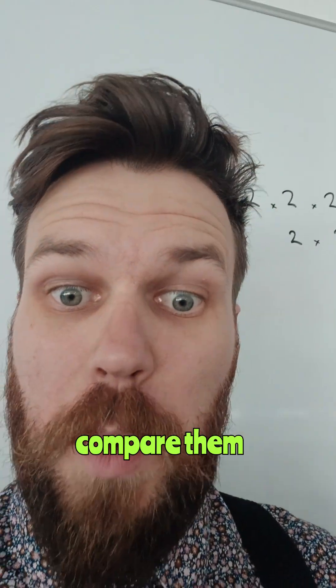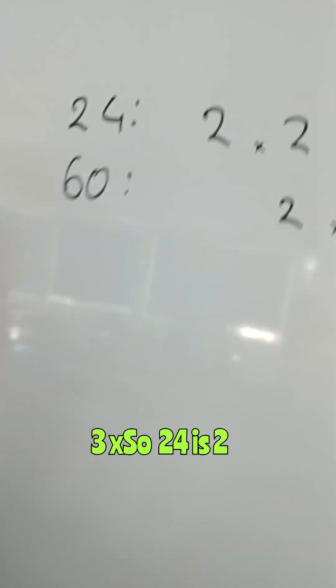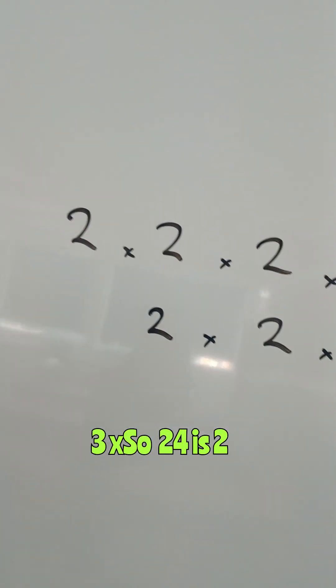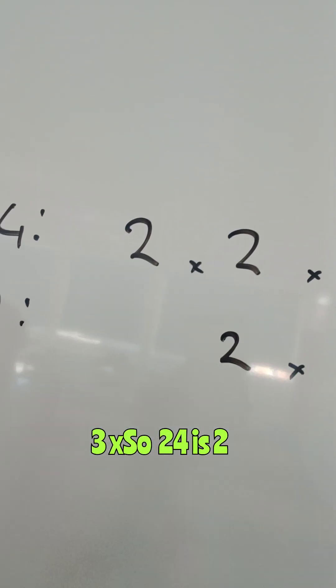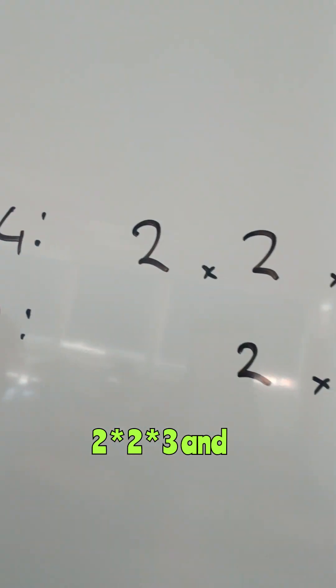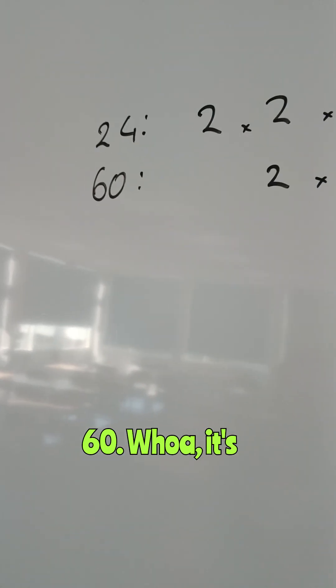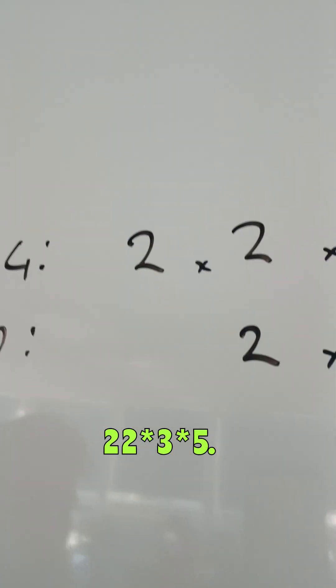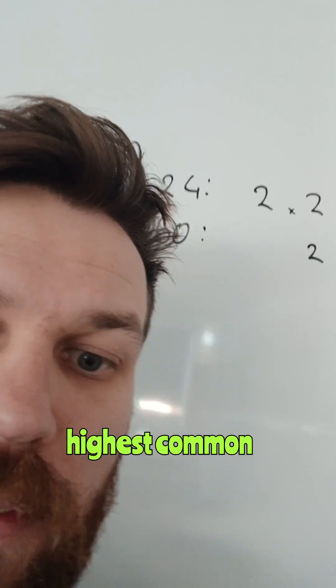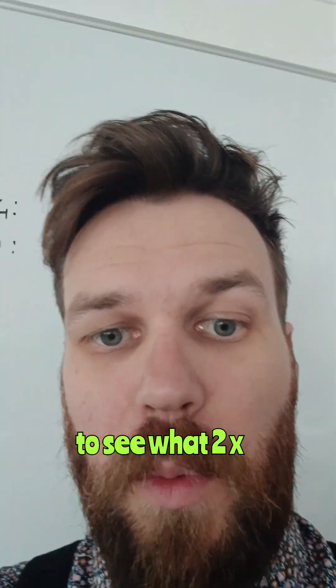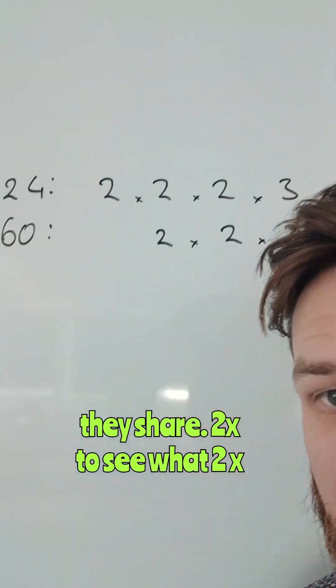What I need to do is compare them both. 24 is 2 times 2 times 2 times 3. And 60 is 2 times 2 times 3 times 5. For the highest common factor, I want to see what they share.